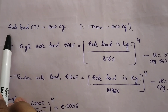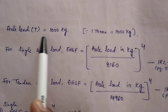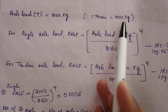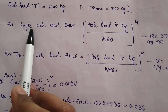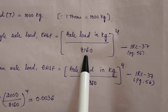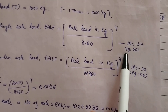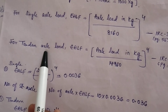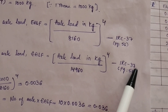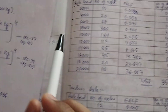The first step of the solution: whenever the load is given in terms of tons, we have to convert it into kg by multiplying with 1000 — so one ton equals 1000 kg. For calculating EALF for single axle load, the formula is: EALF = (axle load in kg / 8160) raised to the power 4, as per IRC 37-2001, page 56. For tandem axle load, the formula is: EALF = (axle load in kg / 14960) raised to the power 4, also as per IRC 37-2001, page 56.